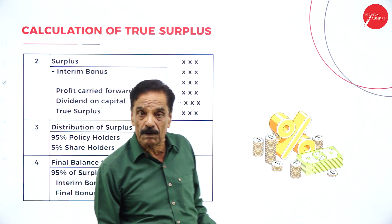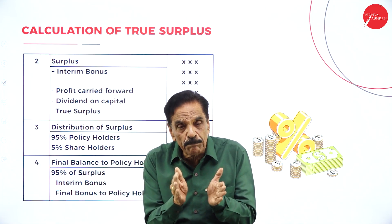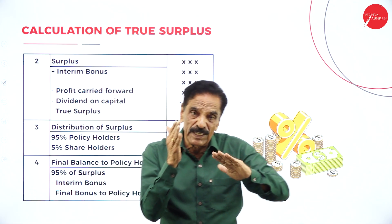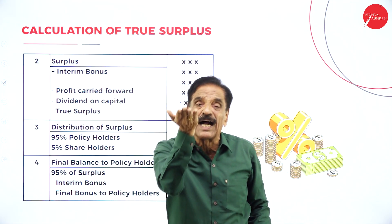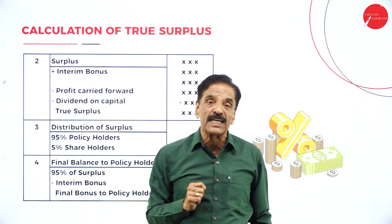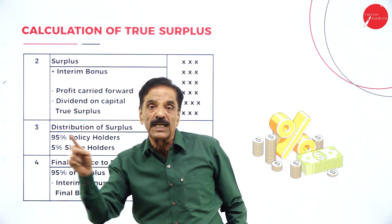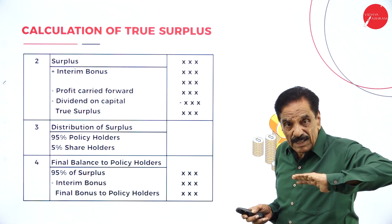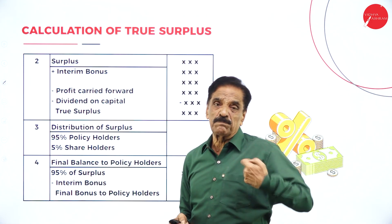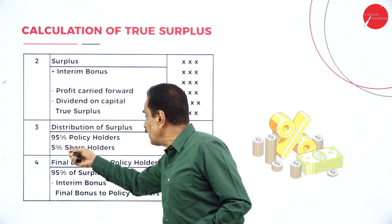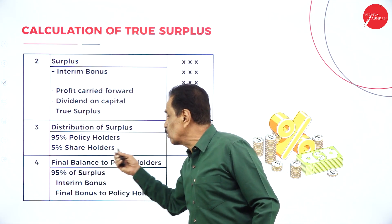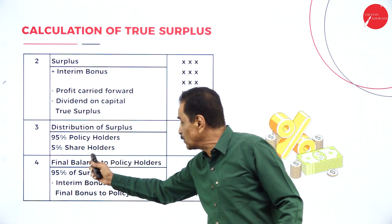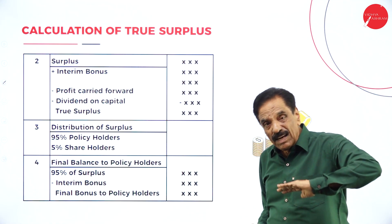Whatever the difference, that is the true surplus. So: life fund at the end of the year minus net liability equals surplus. To the surplus, add interim bonus, minus profit carried forward, minus dividend — whatever difference comes is the true surplus. Then in the third step, distribution of true surplus: as per the insurance business, 95% goes to the policyholder and 5% goes to the shareholder, out of the true surplus.